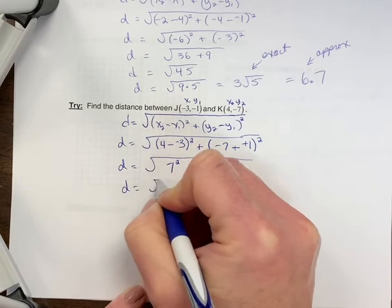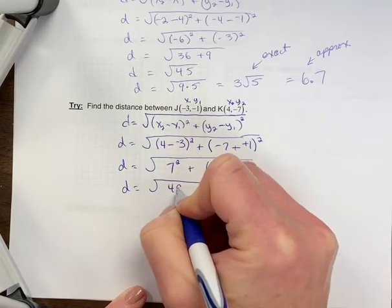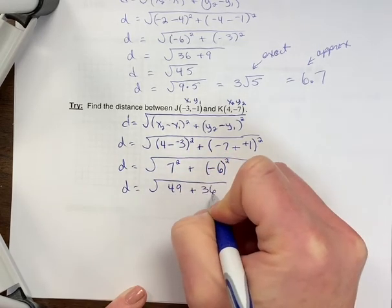Now let's square each of these. So seven squared is 49, plus negative six squared is 36.